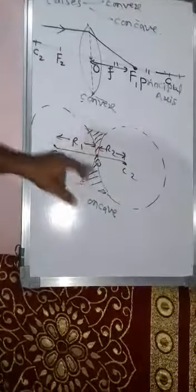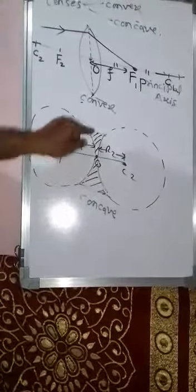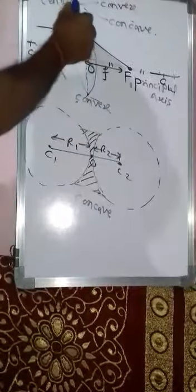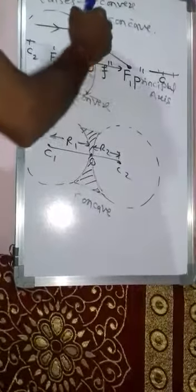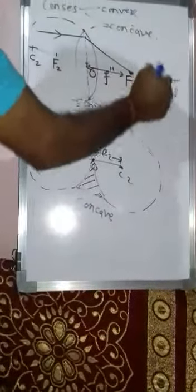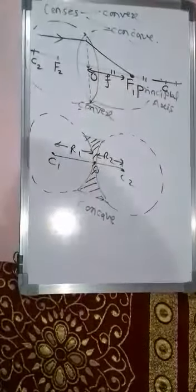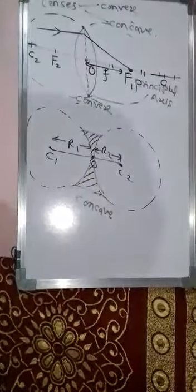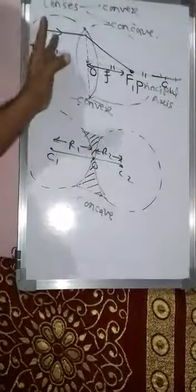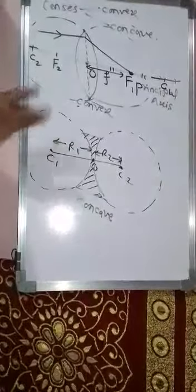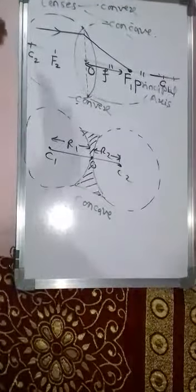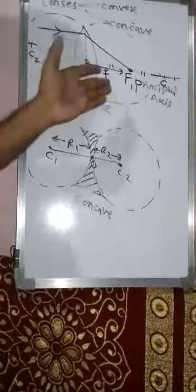A concave lens is formed by joining two spheres at a small distance apart. A convex lens is formed by converging or overlapping two spheres inside each other. In this way we have studied convex lens and concave lens. In the next period we will see how images are formed by convex lens and concave lens.